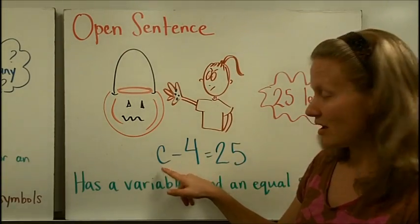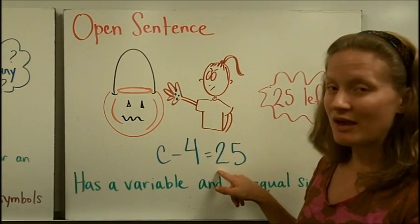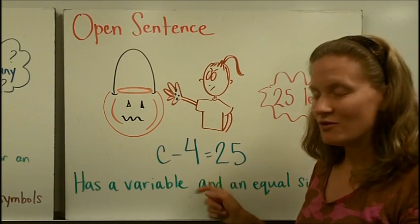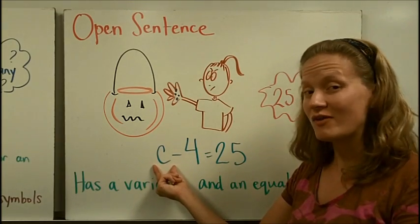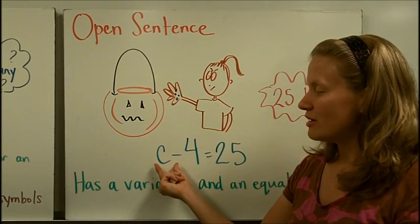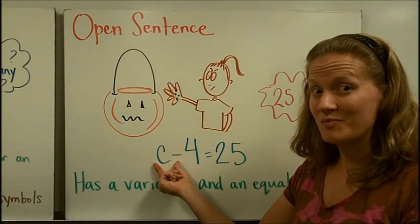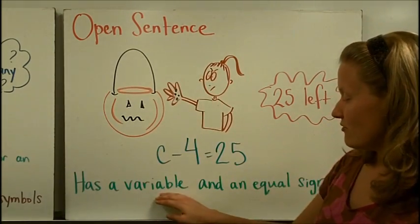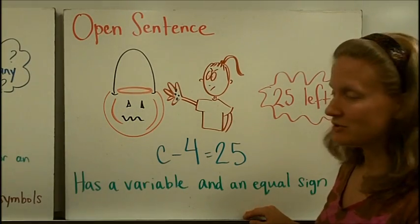So now we can write an open sentence that tells what happens. We started with C pieces of candy, we took away four, and we have 25 pieces left. Once you have an open sentence, then you can solve it to figure out how much, you can solve for C to figure out how many pieces of candy you started with. So an open sentence has both a variable and an equal sign.